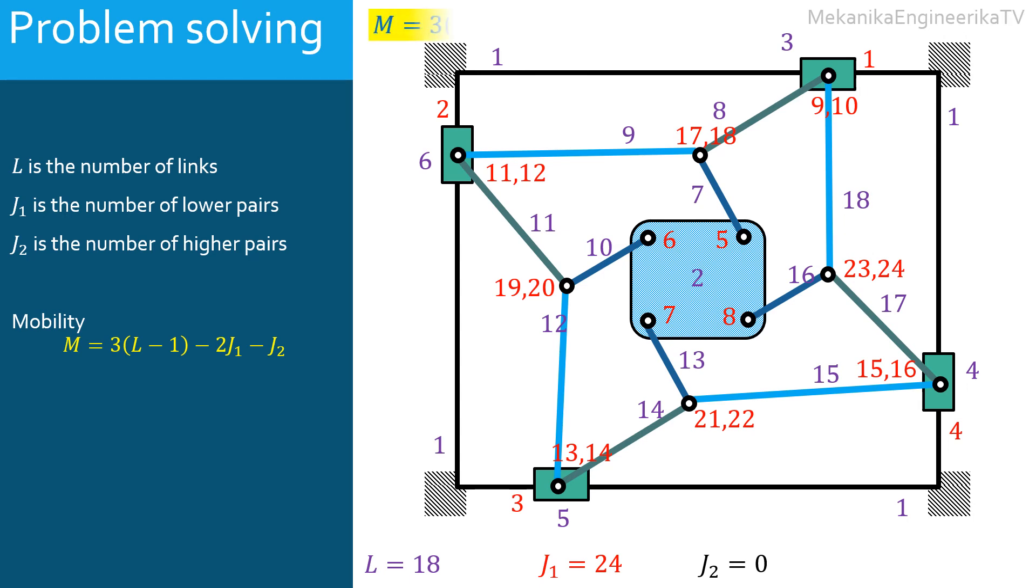Substituting the value of L, J1 and J2 in the equation of mobility gives M is equal to 3. Here, 3 degrees of freedom can be controlled independently. For example, it is possible to control independently 3 sliders out of the 4. The mechanism should receive 3 inputs.